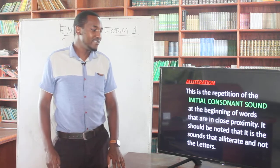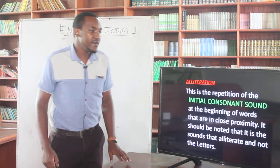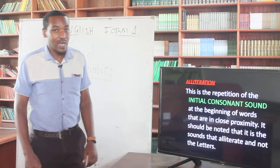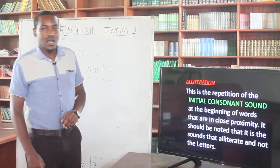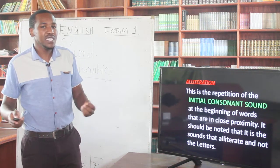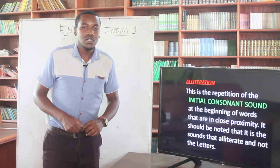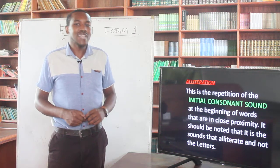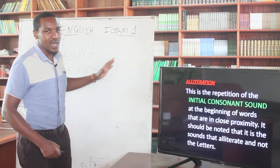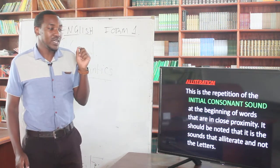Then, we have alliteration. Alliteration is the repetition of initial consonant sound — not vowel sound, but consonant sound — at the beginning of words that are in close proximity. It should be noted that it is the sounds that are repeated, not the letters. So remember, we ask what do you hear, not what do you see.